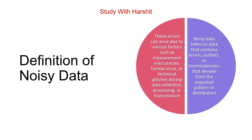इसी वजह से noisy data create होता है. Noisy data refers to data that contain errors, outliers, or inconsistencies that deviate from the expected pattern or distribution. Noisy data जो है reference होता है उस data को जो अपने आप में errors, गलतियां, outlier और inconsistency contain करता है, और expected pattern or distributions से deviates होती है.